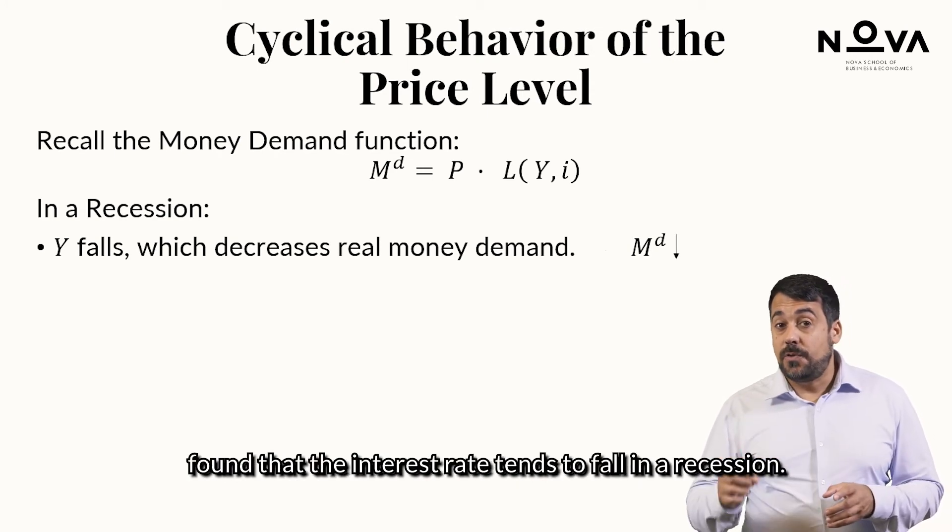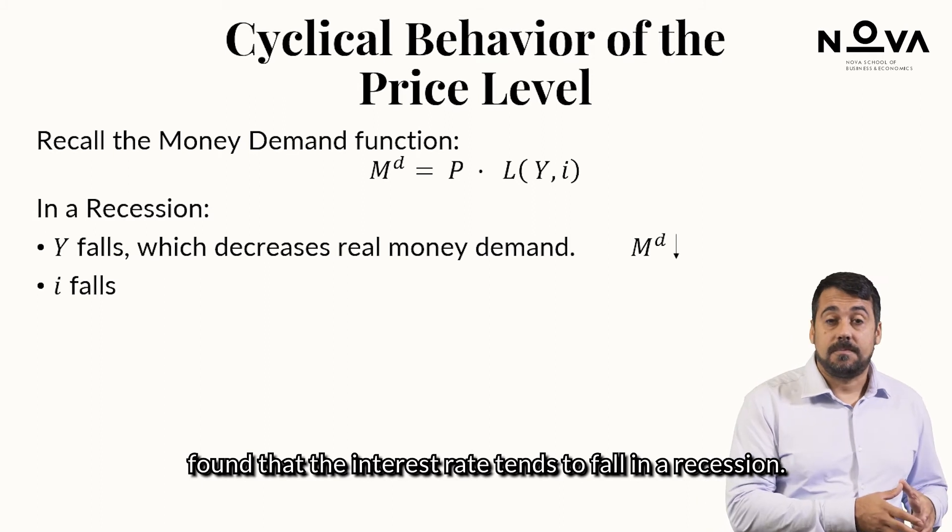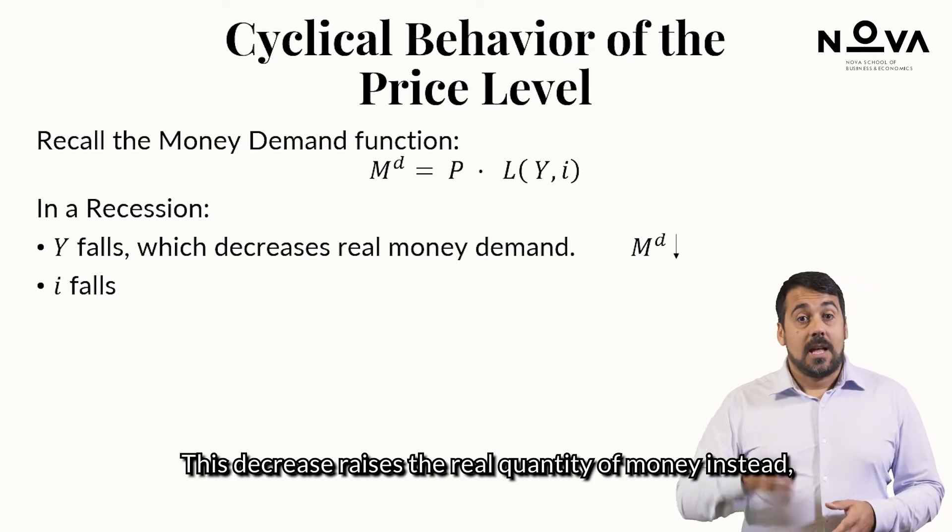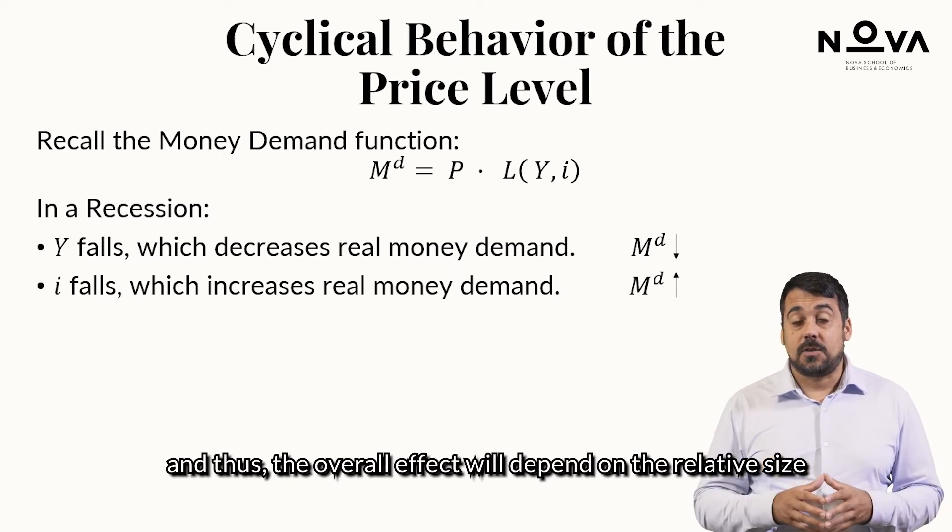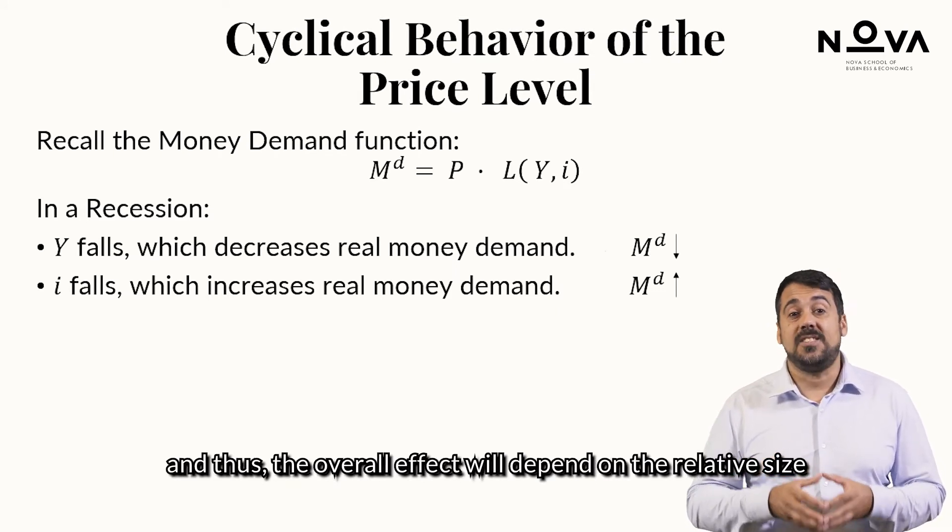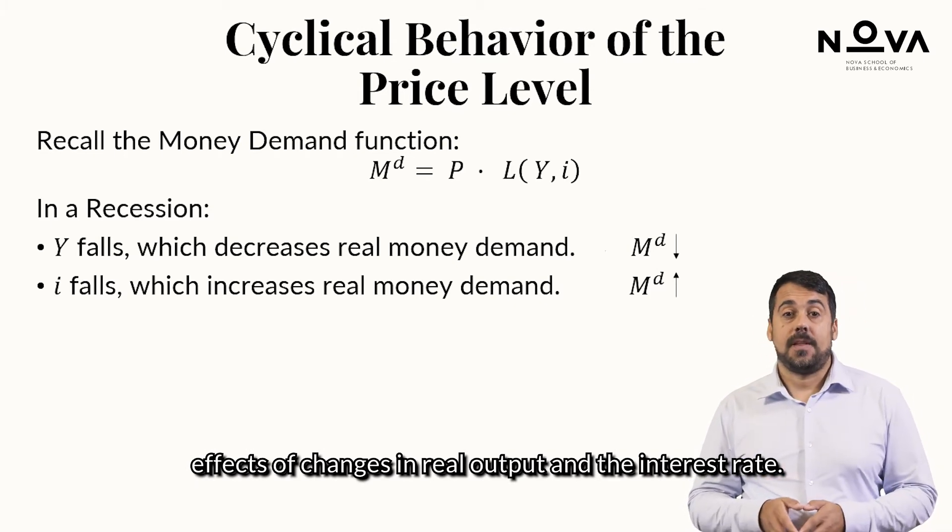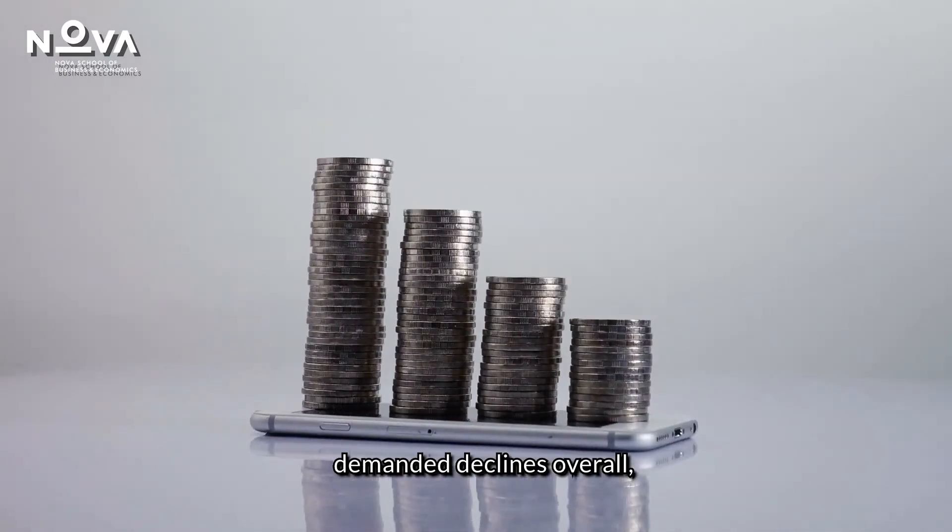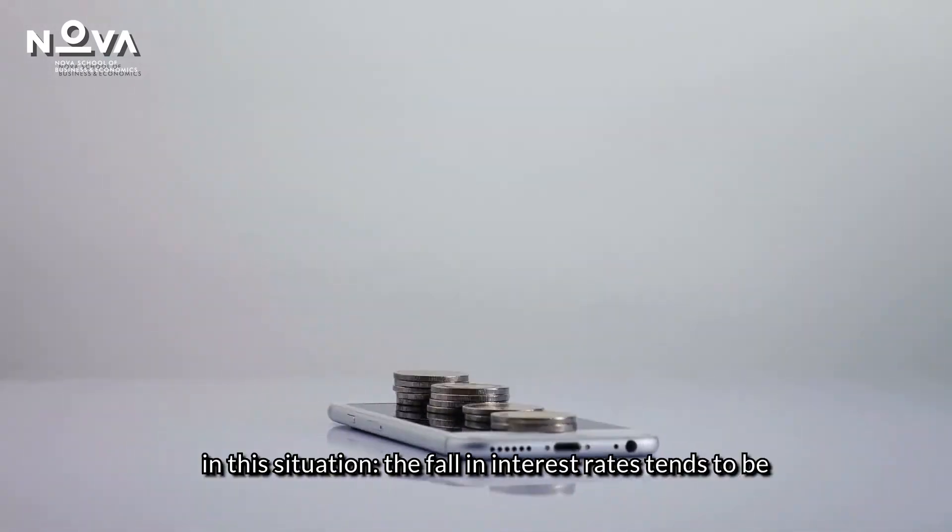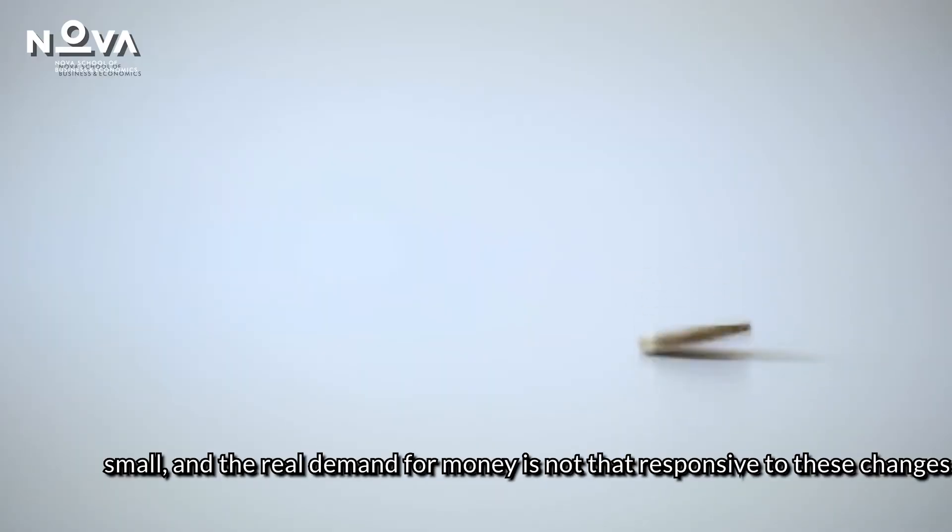However, we also found that the interest rate tends to fall in a recession. This raises the real quantity of money instead, and thus the overall effect will depend on the relative size effects of changes in real output and the interest rate. Typical estimates indicate that the real quantity of money demanded declines overall in this situation. The fall in interest rates tends to be small, and the real demand for money is not that responsive to these changes.